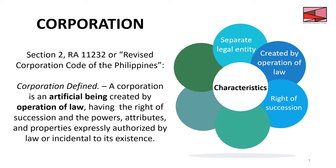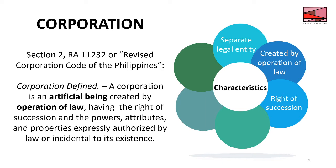Right of succession: when a shareholder dies, their shares can be inherited by their child or whoever should inherit, without the consent of other shareholders — unlike in a partnership where admission or withdrawal requires all partners' knowledge. Power attributes and properties authorized by law are laid down by law; you'll study those more specifically in partnership and corporation law. Ownership is divided into shares — unlike partnership where distribution is based on profit or loss ratio, here it depends on how many shares one holds, whether preference or common (ordinary) shares.